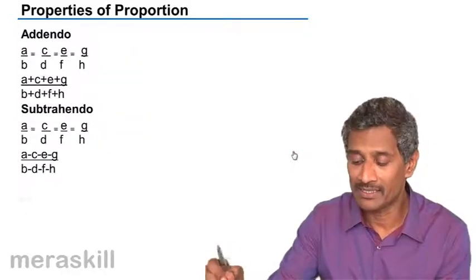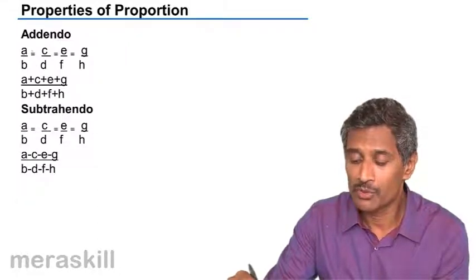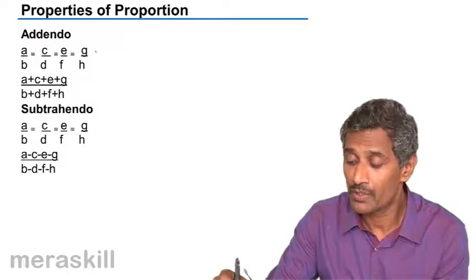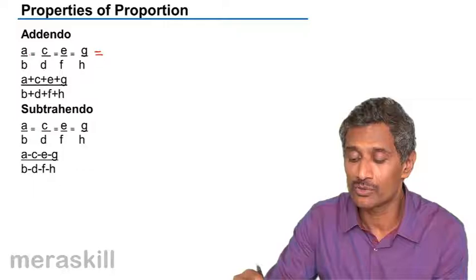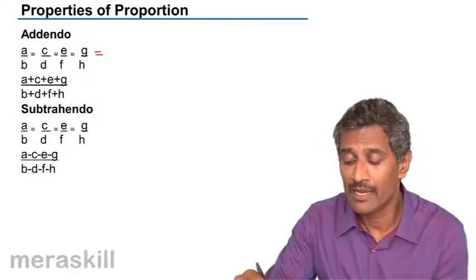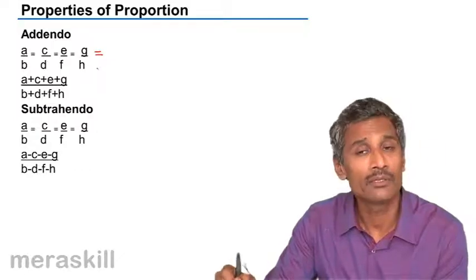Furthermore, we have addendo. This is addendo. There are a number of ratios: A/B, C/D, E/F, G/H. They're all in proportion. And each of these is equal to a new ratio which is obtained by adding all the antecedents and adding all the consequents, or adding all the first terms and adding all the second terms.